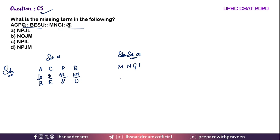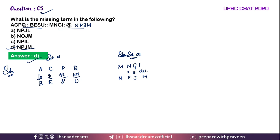So we can write: N, O, P — H, I, J — J, K, L and M. So we can write M, N, G — so the answer is N, P, J, M. Option D: N, P, J, M — yes, Option D is the right answer.